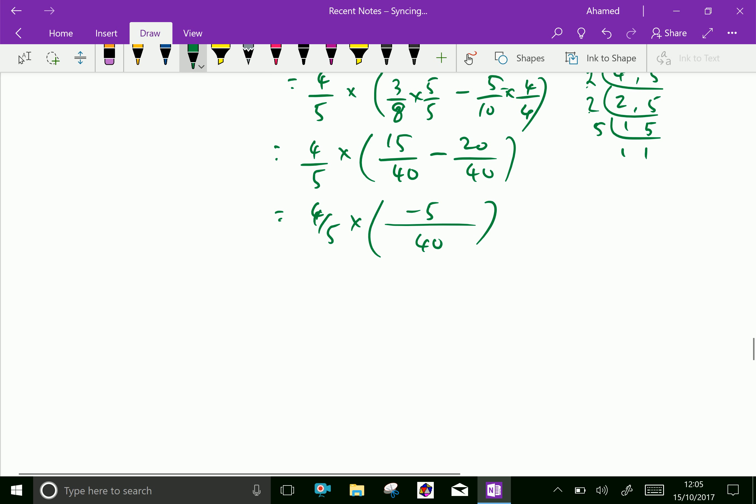So without bracket we will write 4 over 5 into minus 5 over 40, and 5 and 5 cut as 1 and 1. So minus 4 over 40, which is equal minus 1 over 10.